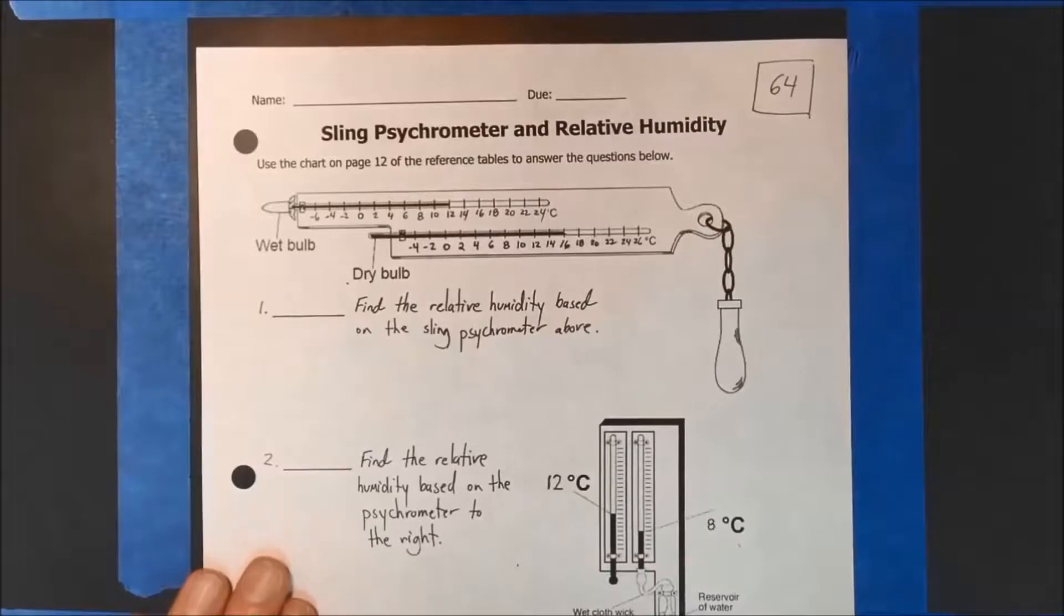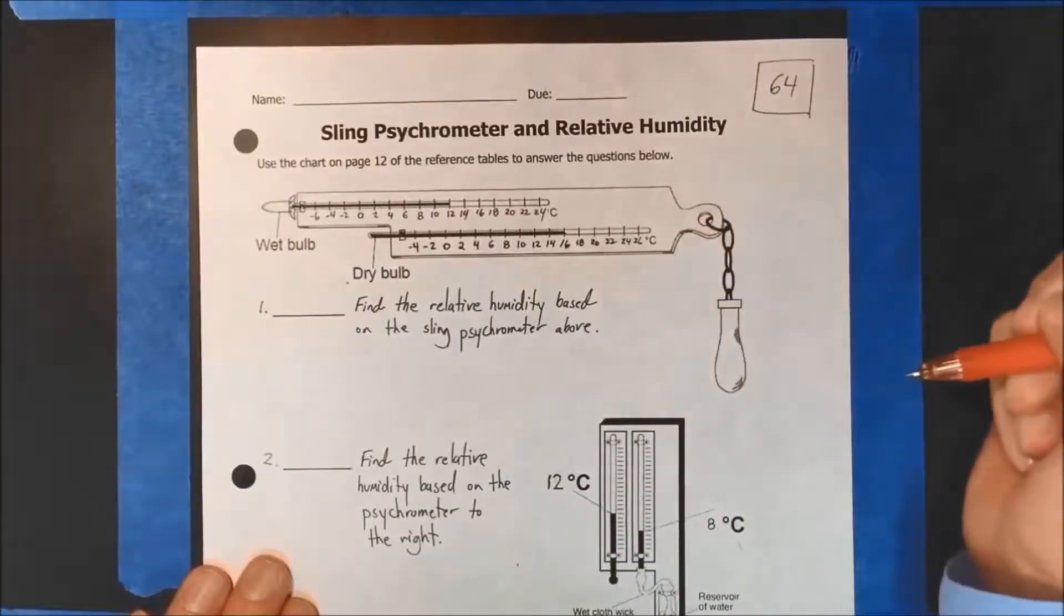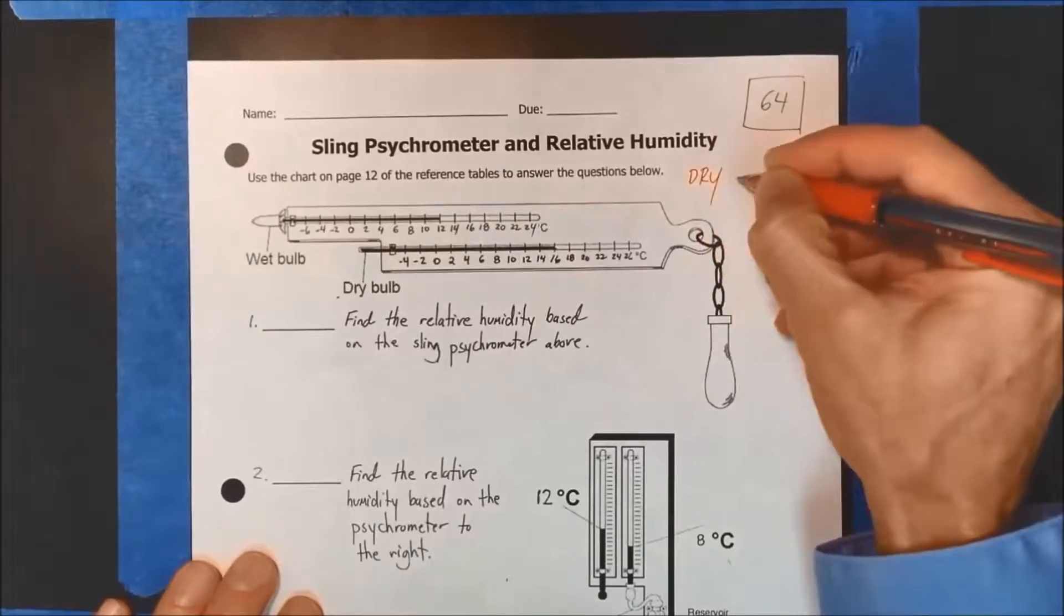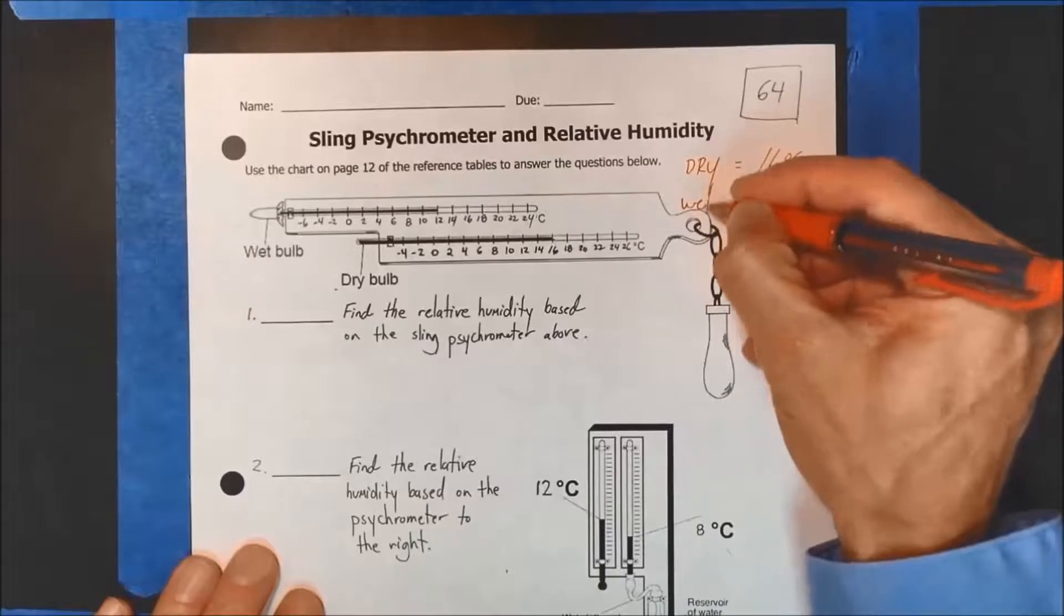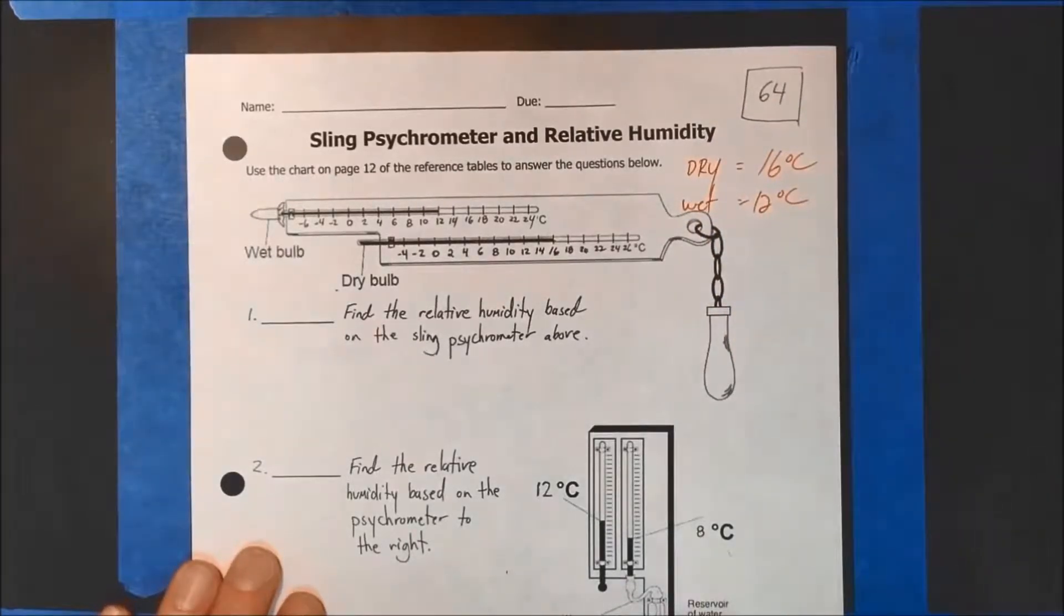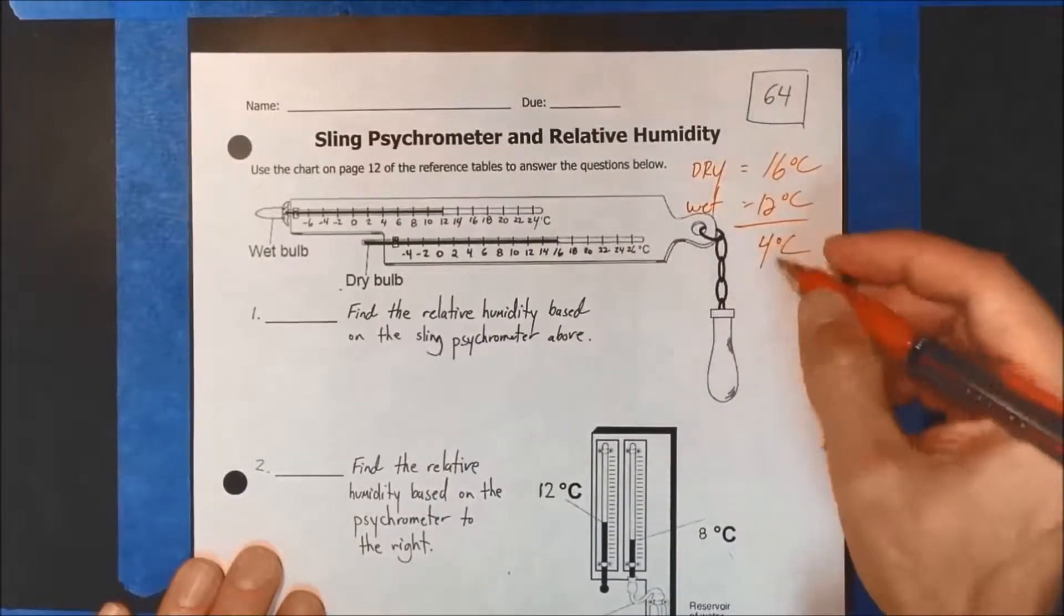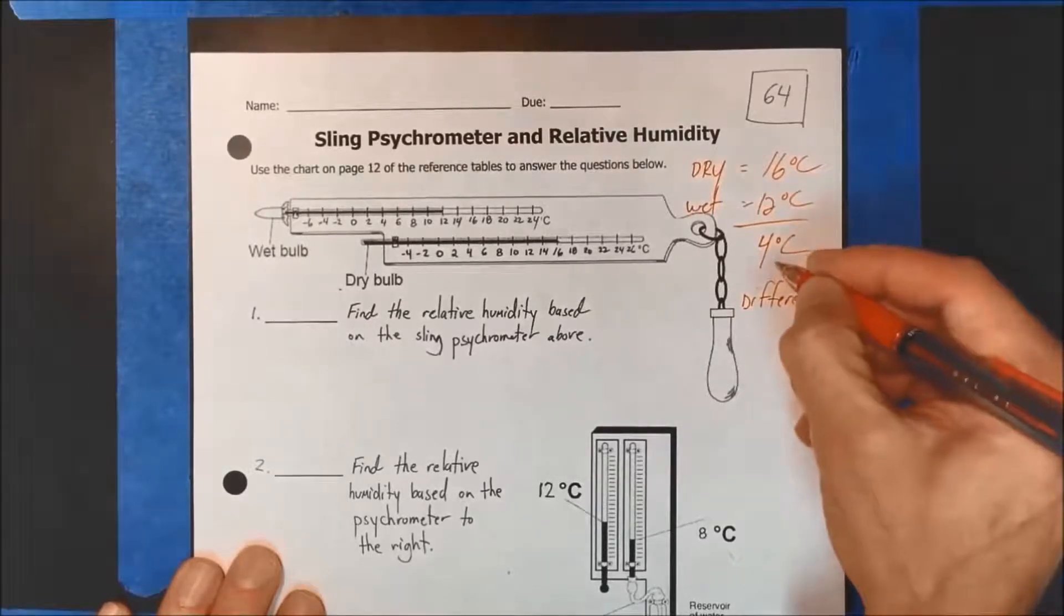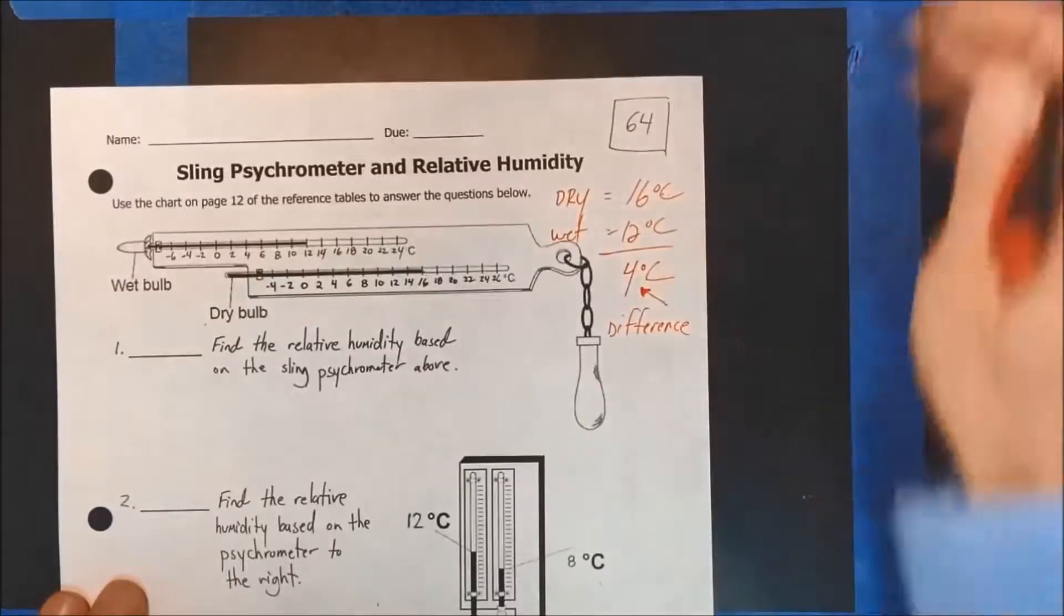Find the relative humidity based on the sling psychrometer above. So the dry bulb here is 16 degrees C and the wet bulb is 12 degrees C. So I'm just going to abbreviate: dry is 16 degrees C, wet is 12 degrees C. And the key thing we're looking for is difference here. The difference between them, 4 degrees C. That is most important. That is the difference. I cannot stress that enough. That's a common mistake people make, they don't find the difference. So it's 4.